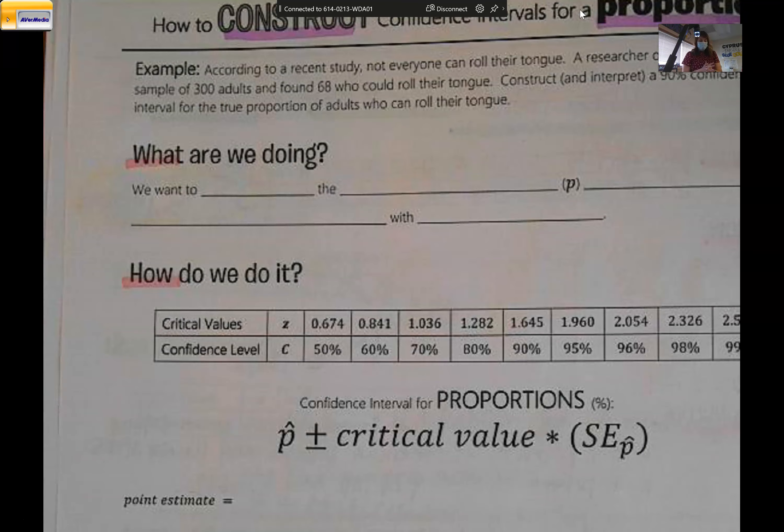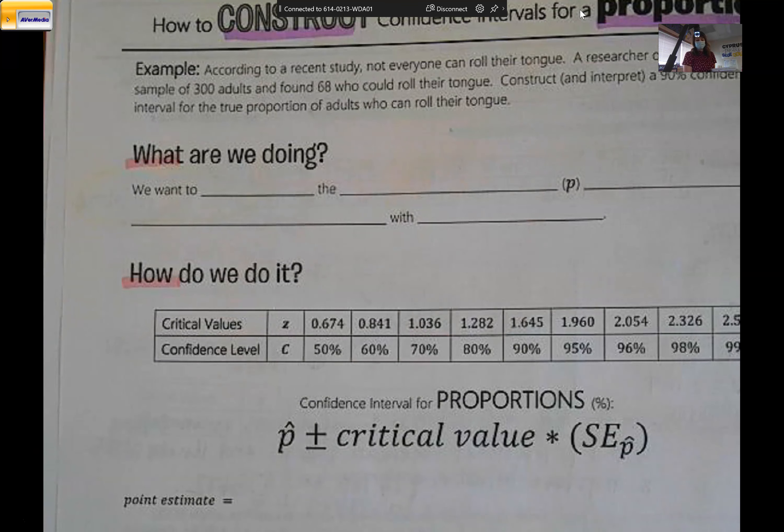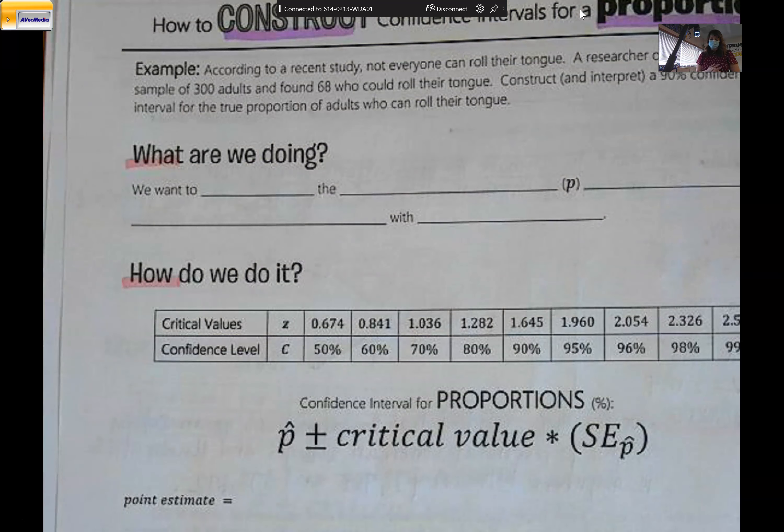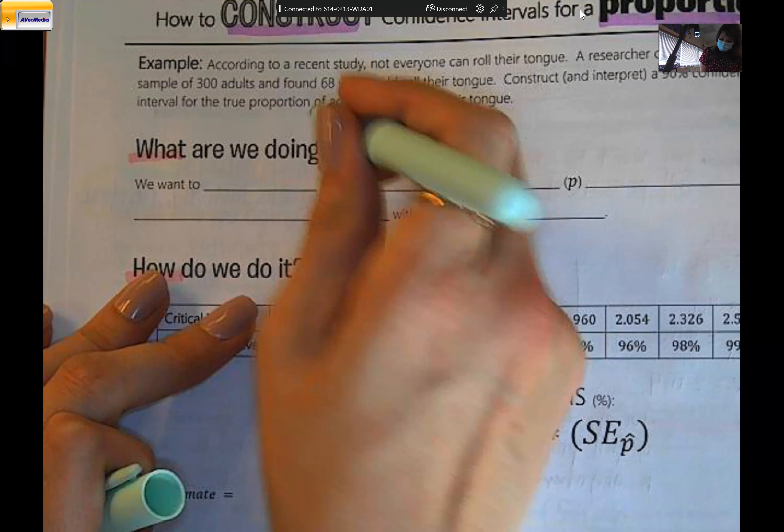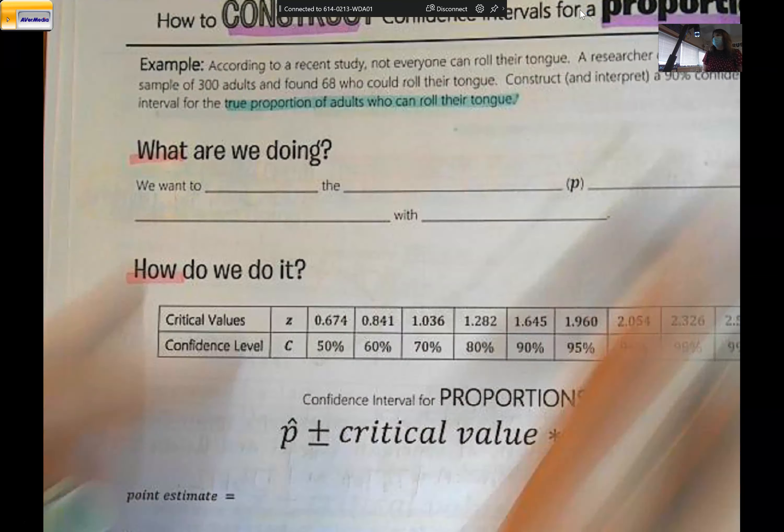So our example for this one is, according to a recent study, not everyone can roll their tongue. A researcher observed a random sample of 300 adults and found 68 who could roll their tongue. Construct and interpret a 90% confidence interval for the true proportion of adults who can roll their tongue.